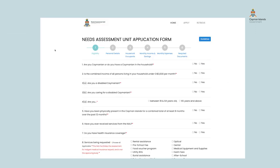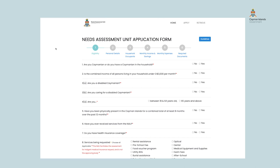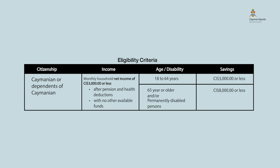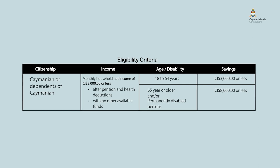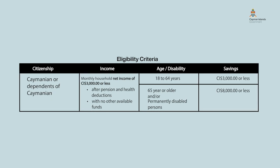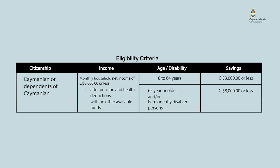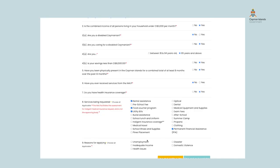Enter the requested data in all fields. Step one: Eligibility. This section covers key questions that determine if the applicant — the person seeking financial assistance — qualifies for financial assistance from the Needs Assessment Unit. Persons who are Caymanian or dependents of a Caymanian with a monthly household net income of C.I. $3,000 or less after pension and health deductions, who have no other available funds, and savings of C.I. $3,000 or less if age 18 to 64, or C.I. $8,000 or less if age 65 or older and/or permanently disabled. Please answer all the questions on this page, then click the save and go to next step button.